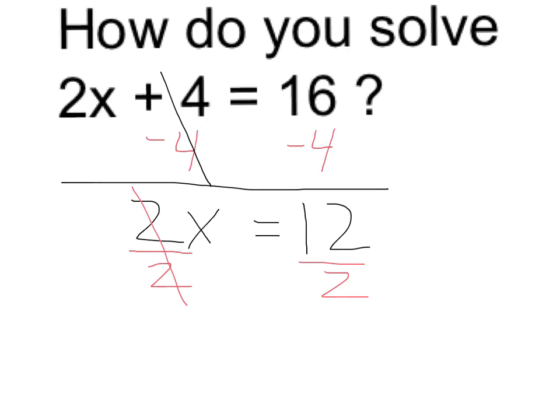If I divide by 2 on the left, I'm simply left with x. 2 over 2 is 1, 1 times x is equal to x, and that's equal to 12 divided by 2, which is 6.